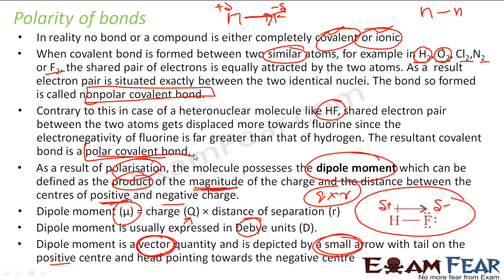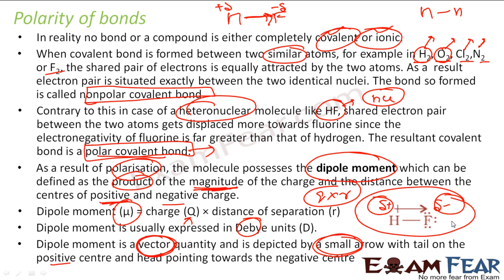Polar covalent bonds exist in heteronuclear molecules — for example HF and HCl. In homonuclear molecules where the atoms are the same, this polarity does not exist; they are called non-polar covalent bonds. But in heteronuclear molecules like HF and HCl, there is a polar covalent bond with partial charges on the atoms of the molecule, even though the whole molecule is electrically neutral. When there are partial charges on the atoms, we have a dipole.